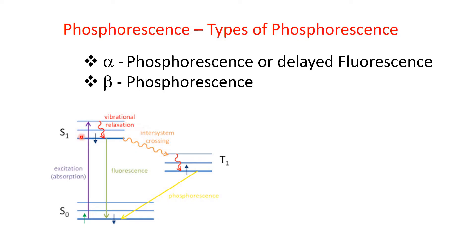When the electron is in the higher energy singlet state, there is no change in spin during promotion. Therefore, the total spin of the electron pair is 0 and the spin multiplicity 2S+1 equals 1. But when the electron is in the higher energy triplet state, there is a change in electron spin. In that case, the total spin S equals 1, and the spin multiplicity 2S+1 equals 3 — that is the triplet state.